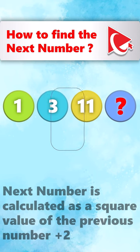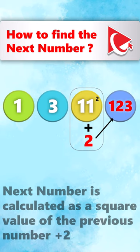So the missing number calculation would be 11 squared, which equals 121 plus 2, which equals 123.